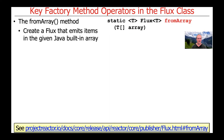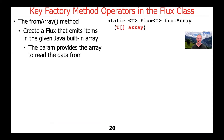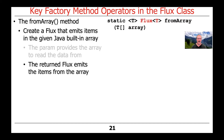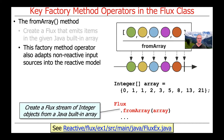Let's now turn our attention to yet another factory method that's part of the Flux class — the fromArray method. As the name suggests, it creates a Flux that will emit items from the given built-in array. Remember that lists and built-in arrays are different types in Java. The parameter passed here provides the data to create the Flux, and what we get back is a Flux that will emit the items that are part of that array. We create a Java built-in array of Integer and use Flux.fromArray to convert it into the corresponding Flux stream.